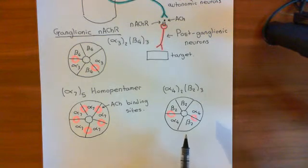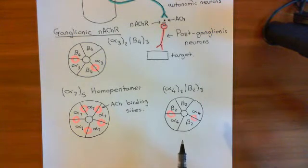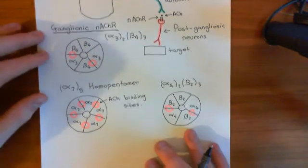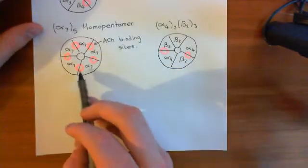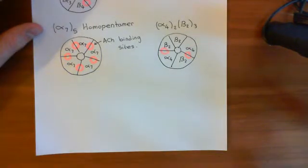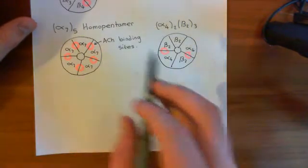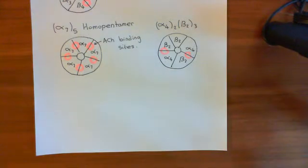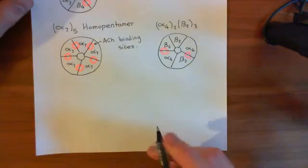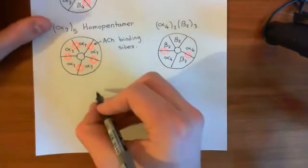Nicotine is not — and I repeat — it is not an agonist at the skeletal muscle form of the receptor. To understand why, let's explore these binding sites, because there is something different within the skeletal muscle binding sites compared to the binding sites within these three other forms, since these three will bind nicotine and the skeletal muscle one will not. So let's discuss the structure of one of these binding sites.